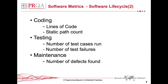Metrics in the maintenance phase are used for retrospective review or future planning. The number of defects found once a product is in the field should obviously be minimised. If it is high, what could be done to improve things in the future?